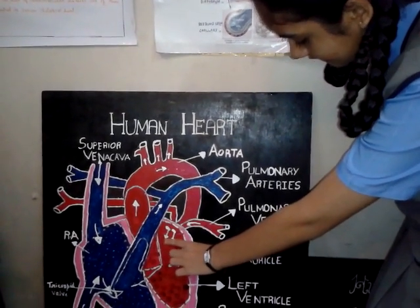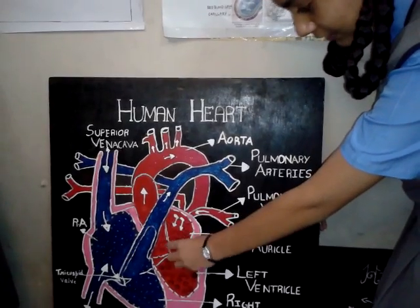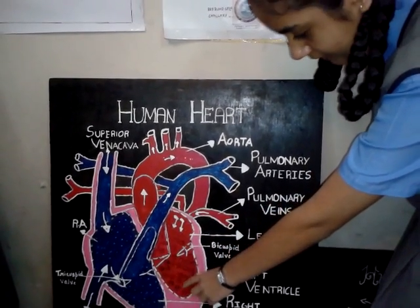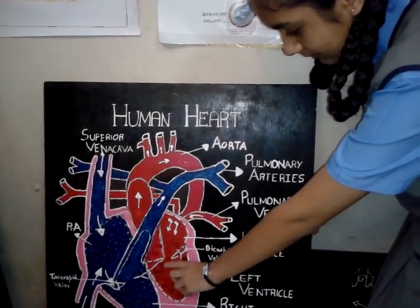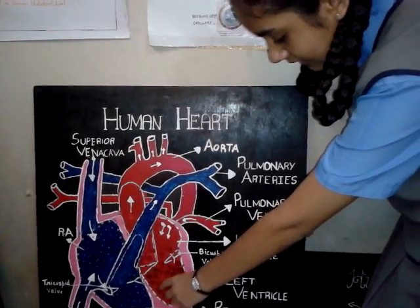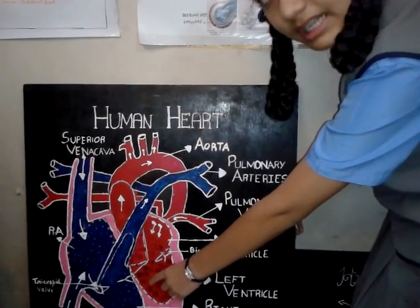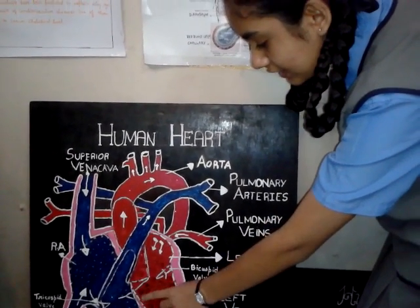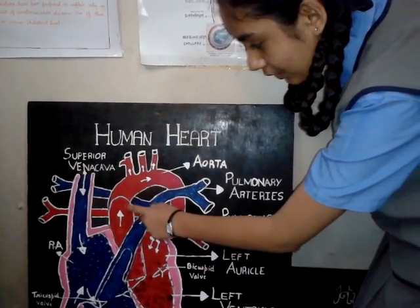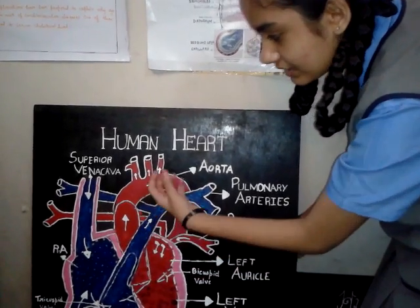Once it has entered the left auricle, the left auricle then contracts to push the blood to the left ventricle through the bicuspid valve. And once it has entered the left ventricle, the left ventricle then contracts the blood to push it to the aorta through the aortic valve and it ranges out to all the parts of the body.